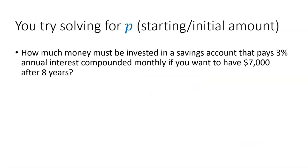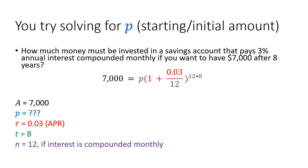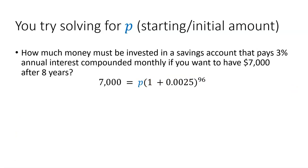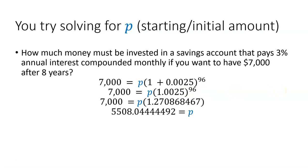Now try solving for P, the starting or initial amount. How much money do you need in a savings account that pays 3% annual interest, compounded monthly, if you want to have $7,000 at the end of eight years? A equals $7,000, the annual rate is 0.03, and the time is 8 years. Dividing 0.03 by 12 gives 0.0025, and 12 times 8 is 96 compounding periods. After adding inside the parentheses and raising to the 96th power, dividing both sides gives us P — you'll need to invest $5,508.04 to reach your goal.